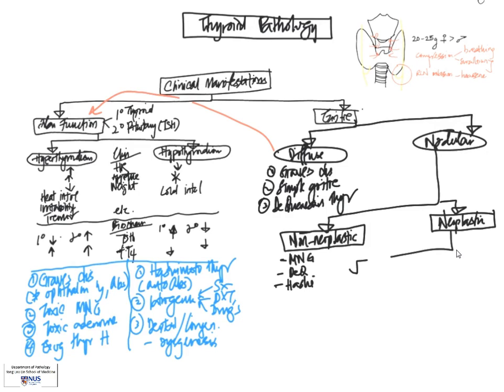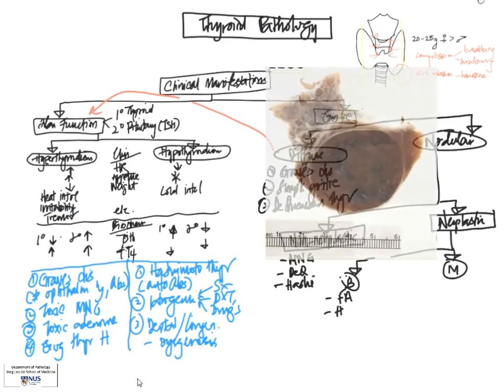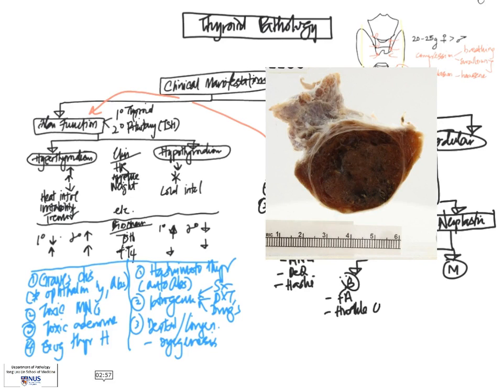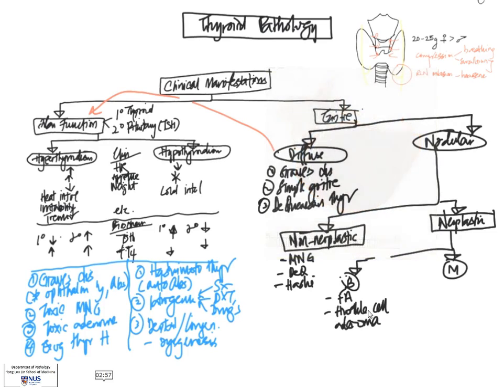And now we move on to the neoplasms. And we first want to stratify them, as always, into benign versus malignant. So for benign neoplasms, it's very simple. There's actually really only one entity, follicular adenoma. And Hürthle cell adenoma is a variant of follicular adenoma. So essentially, there's really only one entity. It's an encapsulated nodule, which is composed usually of very small follicles, very uniform follicles. And sometimes there is this oncocytic or Hürthle cell appearance in the cells, at which time we call it Hürthle cell adenoma.